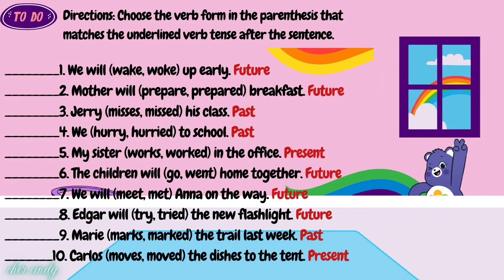Directions: choose the verb form in the parentheses that matches the underlined verb tense after the sentence. Number 1: we will wake/walk up early. Number 2: mother will prepare/prepared breakfast. Number 3: Jerry misses/missed his class. Number 4: we hurry/hurried to school. Number 5: my sister works/worked in the office. Number 6: the children will go/went home together. Number 7: we will meet/met Anna on the way. Number 8: Edgar will try/tried the new flashlight. Number 9: Marie marks/marked the trail last week. And number 10: Carlos moves/moved the dishes to the tent.